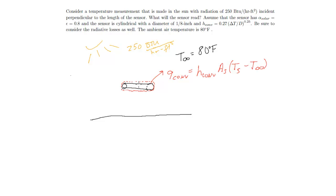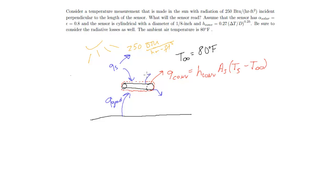The other parts of this are all going to be radiation. What we have coming in: solar radiation, which we already know, radiation coming from the ground, and then the sensor itself is emitting in all directions. So we really have four components: convection loss, solar radiation in, ground radiation in, and sensor emission out.